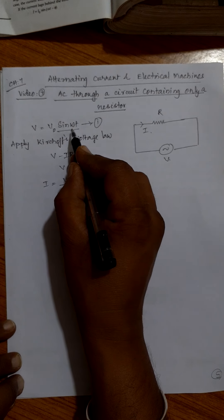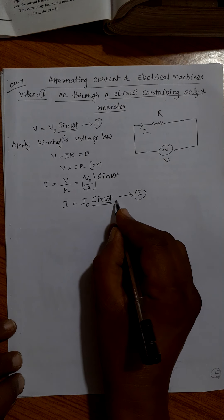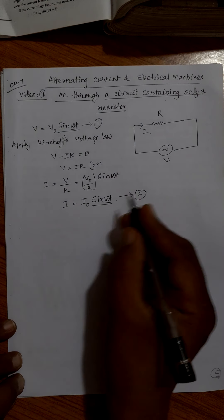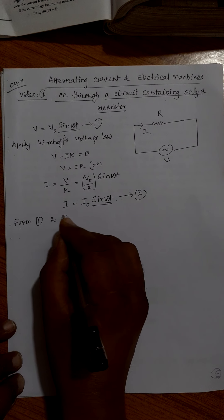You check the equations 1 and 2. This is sine function. This is also sine function. This is having omega t as phase. This is also having omega t as phase. There is no additional phase mentioned here.